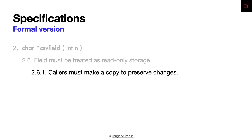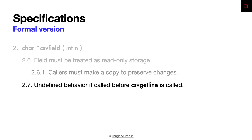Like the line buffer, the field should also be treated like read-only storage, and the caller must make a copy to preserve the changes. Now consider if csv_field gets called before csv_get_line — in that case the output will be undefined behavior, because based on the previous state of the function certain garbage can get returned. This has to be communicated to users as well.